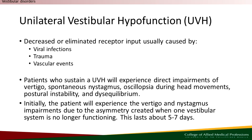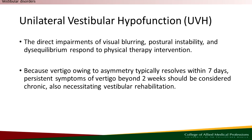Moving on, the next disorder is Unilateral Vestibular Hypofunction, or UVH. UVH often stems from issues like viral infections, trauma, or vascular events, leading to reduced or absent receptor input in the vestibular system. This manifests as vertigo, nystagmus, oscillopsia — the sensation that the surrounding environment is constantly in motion when it is actually stationary — and instability. Initially, vertigo and nystagmus occur due to the imbalance created by the malfunctioning vestibular system, but typically subside within a week. Vertigo that persists beyond two weeks may indicate chronic UVH, requiring specialized vestibular rehabilitation. Other impairments like visual blurring and postural disability may persist beyond one week, and this is usually where physical therapists come in to address them.